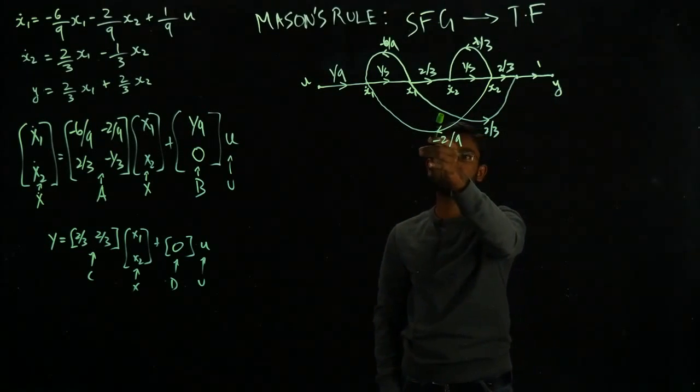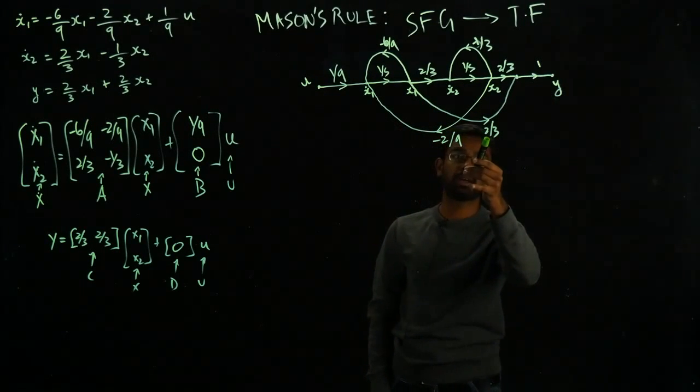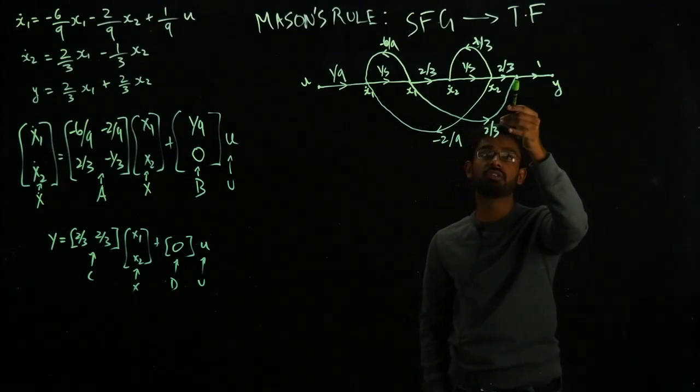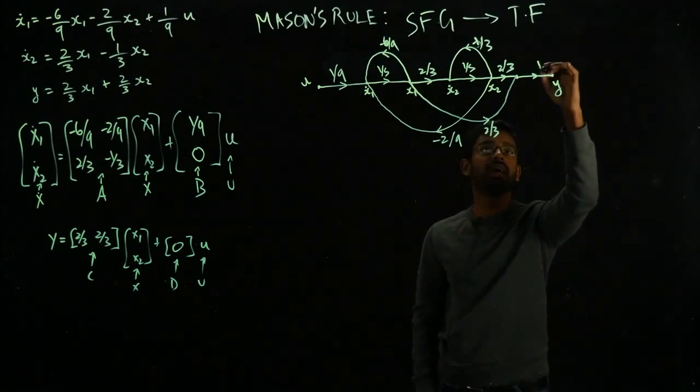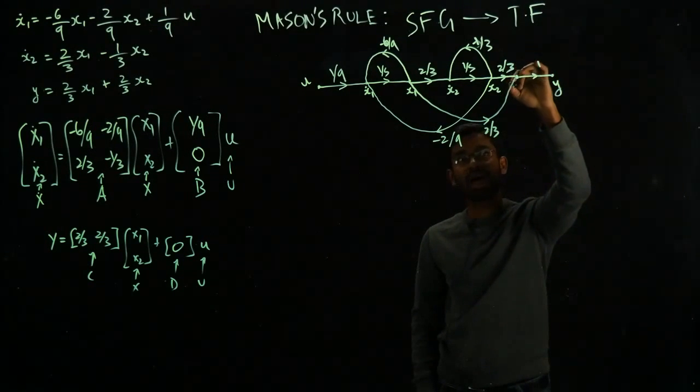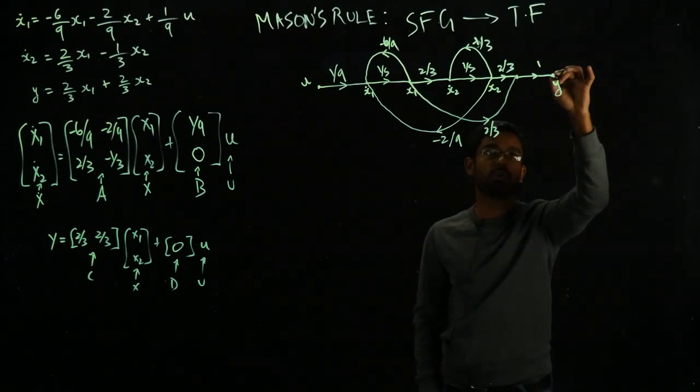For example, let's take this guy. x₁ is being multiplied by 2 over 3 and it is contributing to this node which is going to ultimately end up with y. And this is just one. After you add these two signals, it is just going to go to the output.